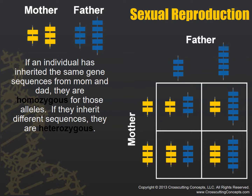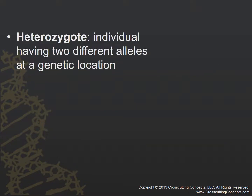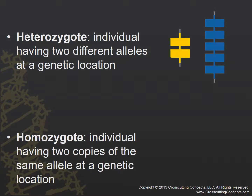If an individual has the same gene sequence from both mom and dad, we call them homozygous for those alleles — homo meaning same. If they inherit different sequences, they're called heterozygous — hetero meaning different. A heterozygote is an individual having two different alleles, while a homozygote is an individual who has the same allele. Make sure to fill out your Punnett square on your graphic organizer.